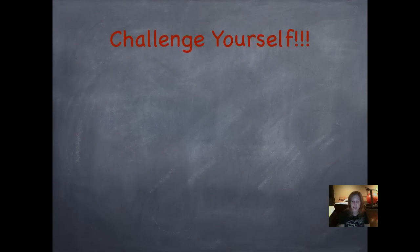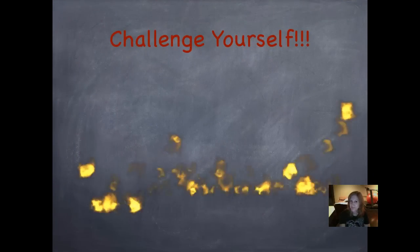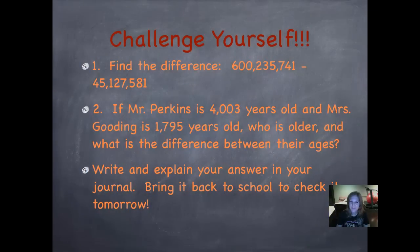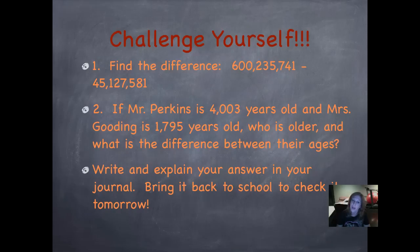Now it's time to challenge yourself. Find the difference of 600,235,741 and 45,127,581. And in number two, if Mr. Perkins is 4,003 years old and Mrs. Gooding is 1,795 years old, who is older and what is the difference between their ages? Write both of those answers in your journal and then bring it back to school and check tomorrow to see how you did.